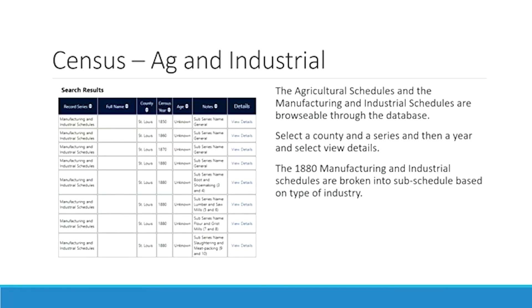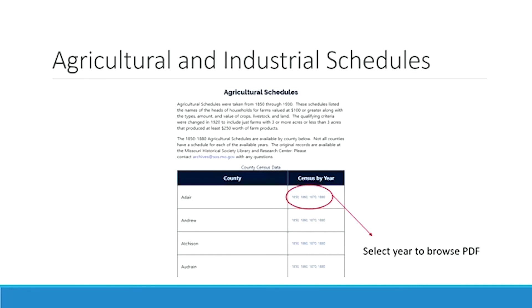If you have browsed to the ag or industrial schedules within the database, the results will show you all the manufacturing schedules for your selected county — for example, searching manufacturing and industrial schedules for St. Louis County gives you 1850 to 1880 all at once. These are browsable through the database as well as through their specific census pages. If you prefer to browse not through the database, the ag census page has a column for the county with a PDF link for each census. Not all counties will have a record for every year — counties that didn't exist in 1850 or 1860 won't have a census, so you'd need to figure out what county they were part of and view that county's census.